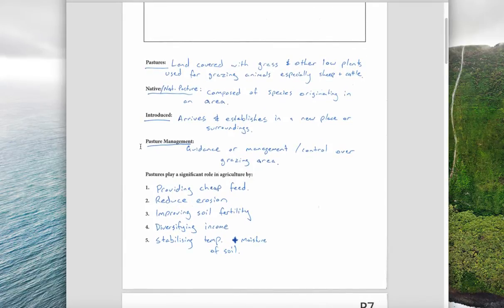Pasture management is any kind of management, maintenance, guidance, or control that someone has over a grazing area. Some pastures are left natural and not managed by people, and others are managed pastures where what species are in there and how well they grow and when there's fertilizer is determined by people.